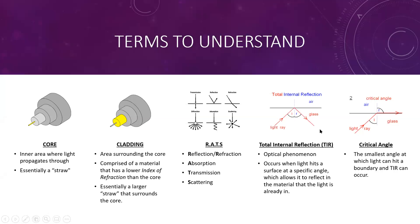Now, here are some terms to understand. We have the core, which is highlighted here — it's this very small inner area where the light propagates through, essentially a straw that the light travels through. It is very small and we will go into the core in more detail later.